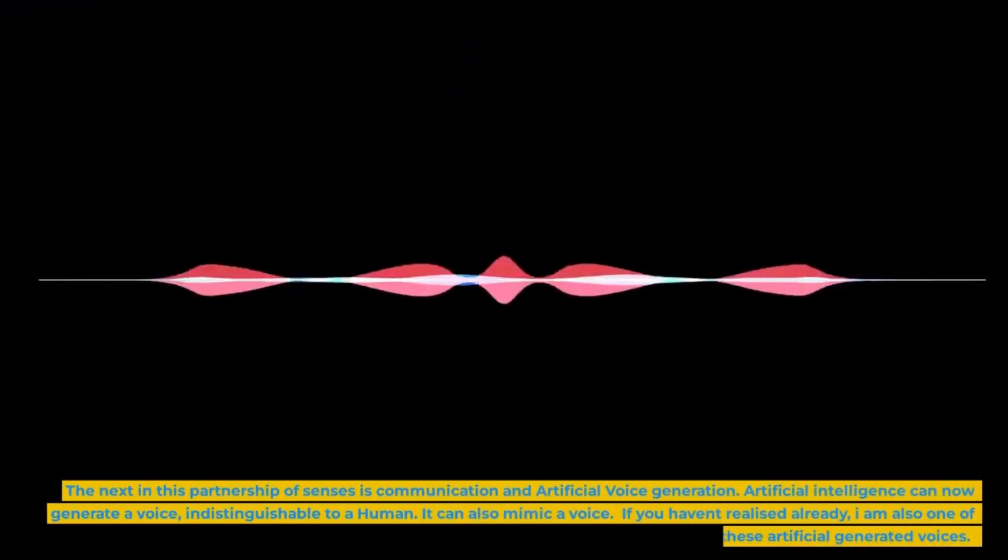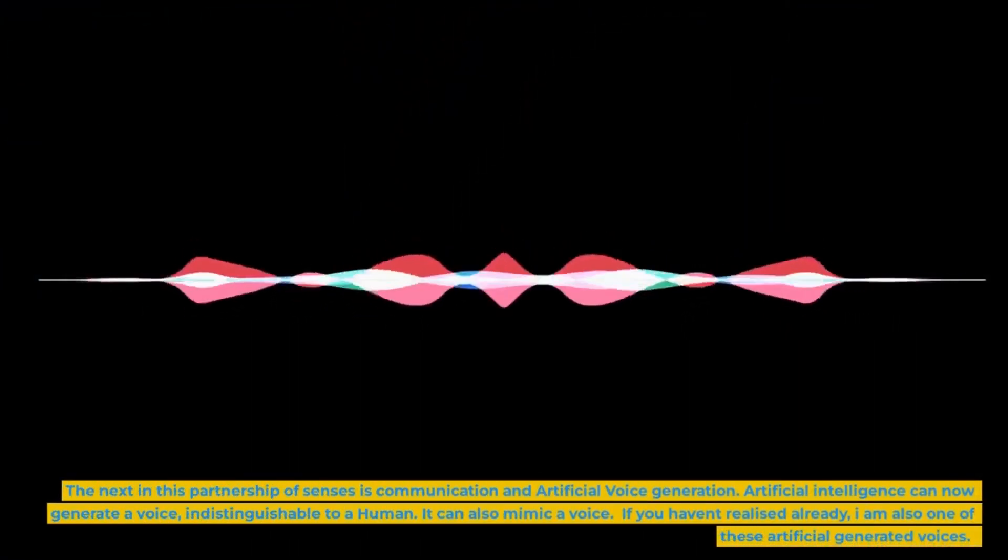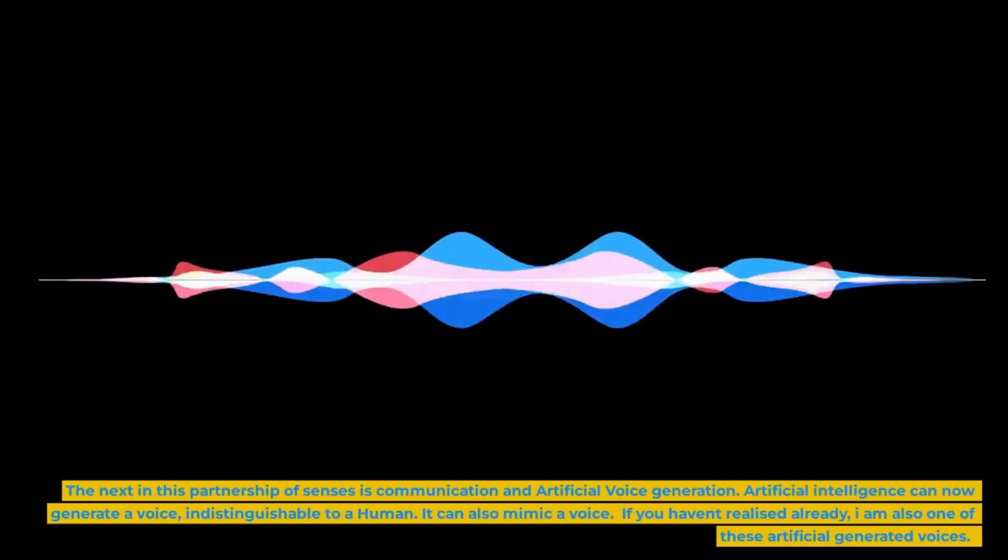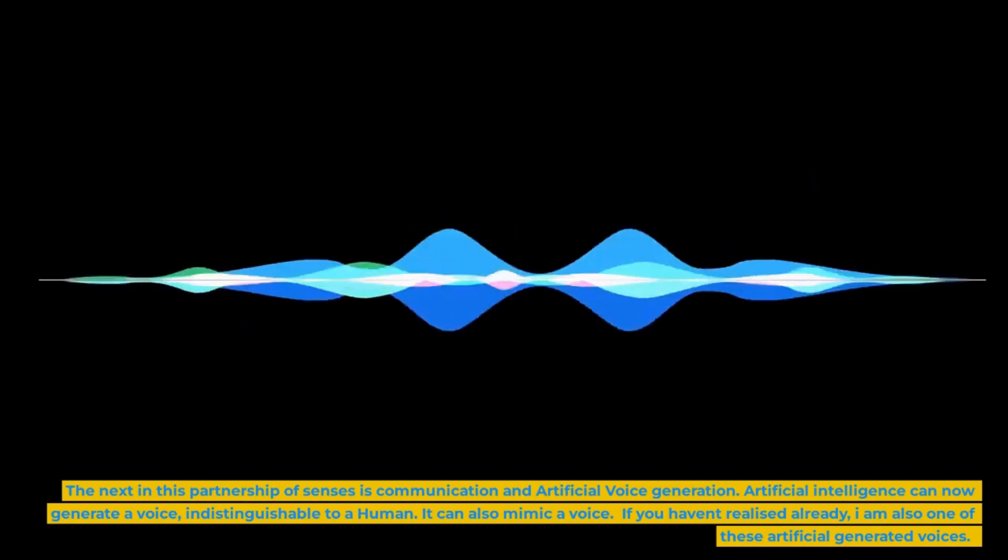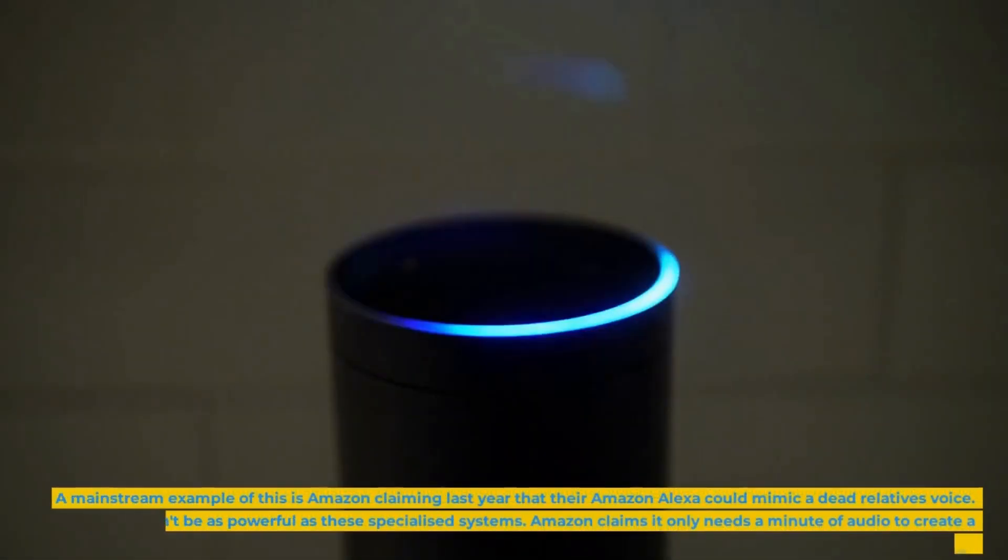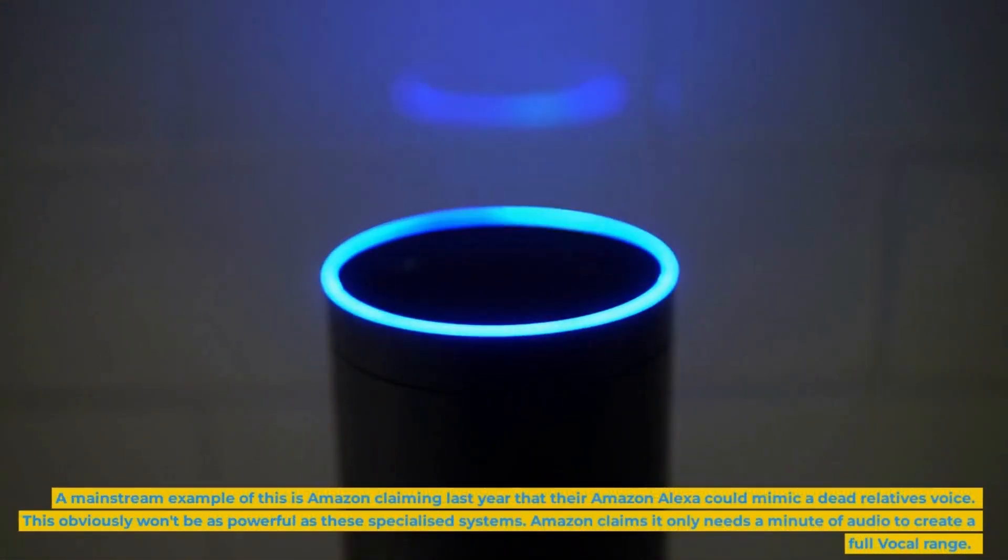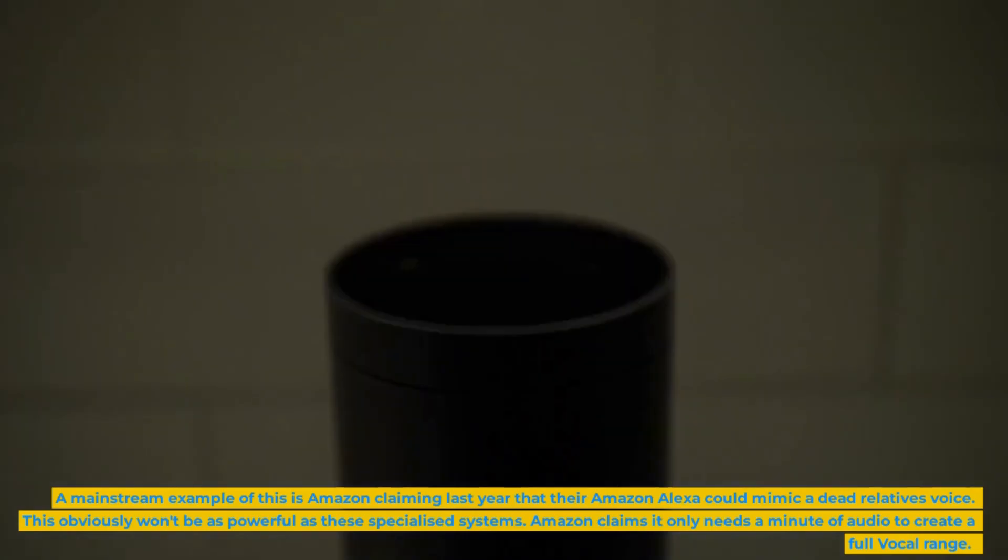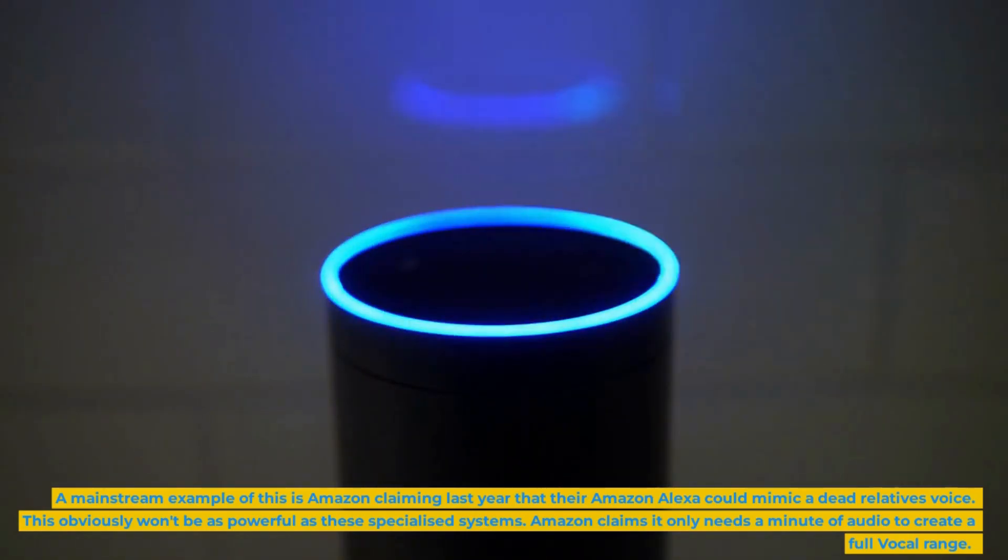The next in this partnership of senses is communication and artificial voice generation. Artificial intelligence can now generate a voice indistinguishable to a human. It can also mimic a voice. If you haven't realized already, I am also one of these artificial generated voices. A mainstream example of this is Amazon claiming last year that their Amazon Alexa could mimic a dead relative's voice. This obviously won't be as powerful as these specialized systems. Amazon claims it only needs a minute of audio to create a full vocal range.